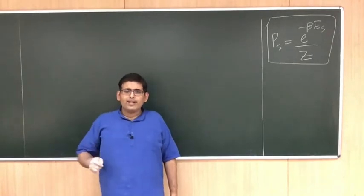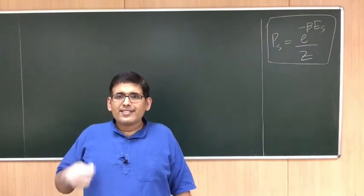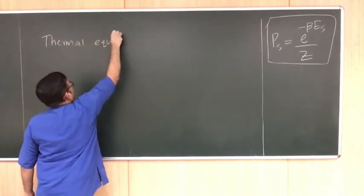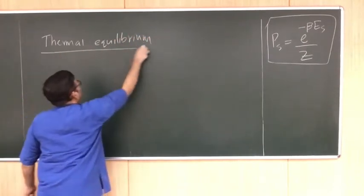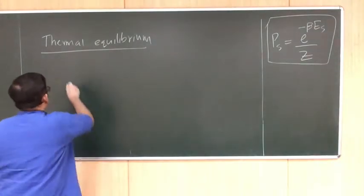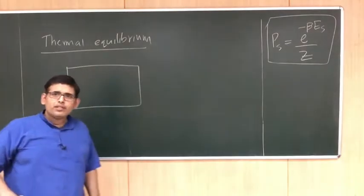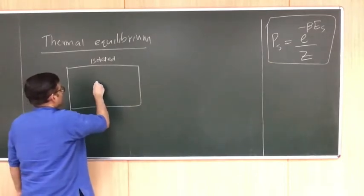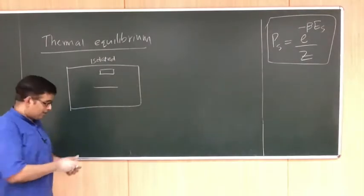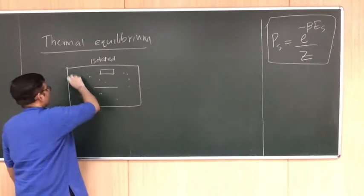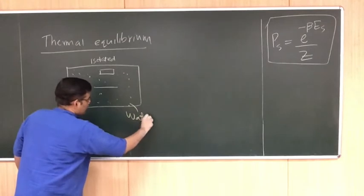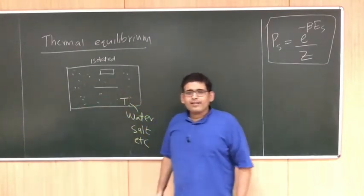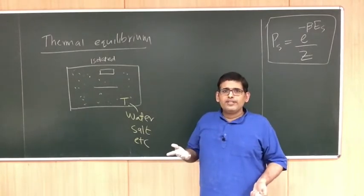Another important point is that the Boltzmann distribution P(s) is an equilibrium distribution — this happens in thermal equilibrium. Let us define equilibrium in this particular way. You have an isolated system, isolated from outside, containing DNA, a protein molecule, water, ion molecules, and salt at some temperature T.